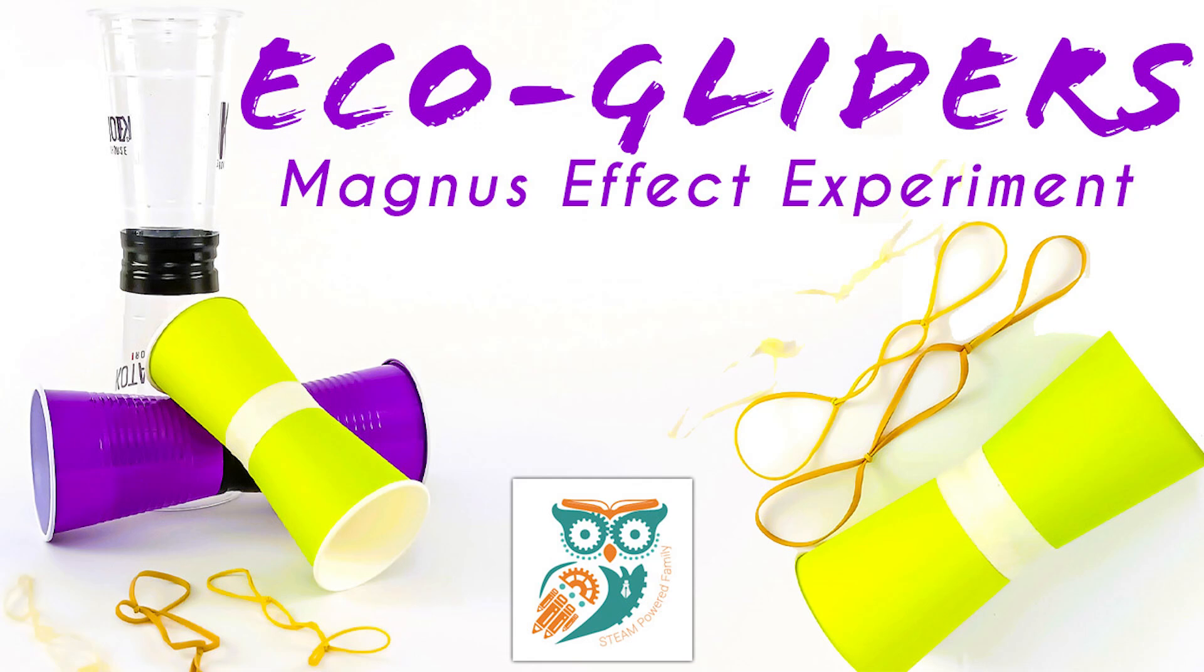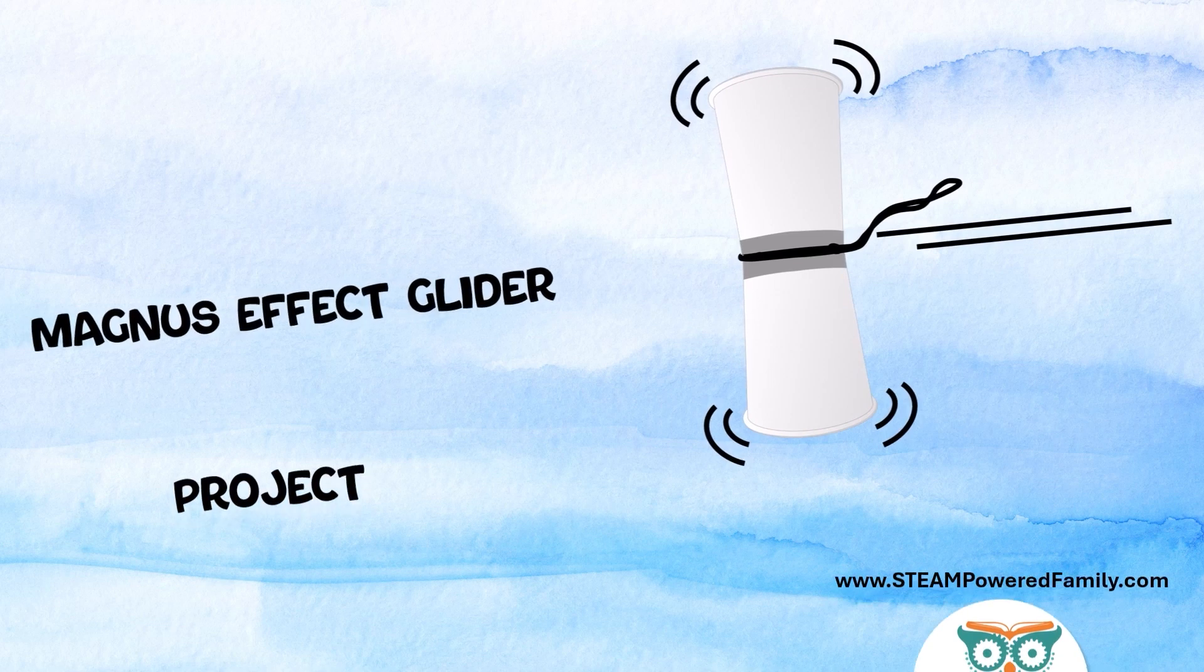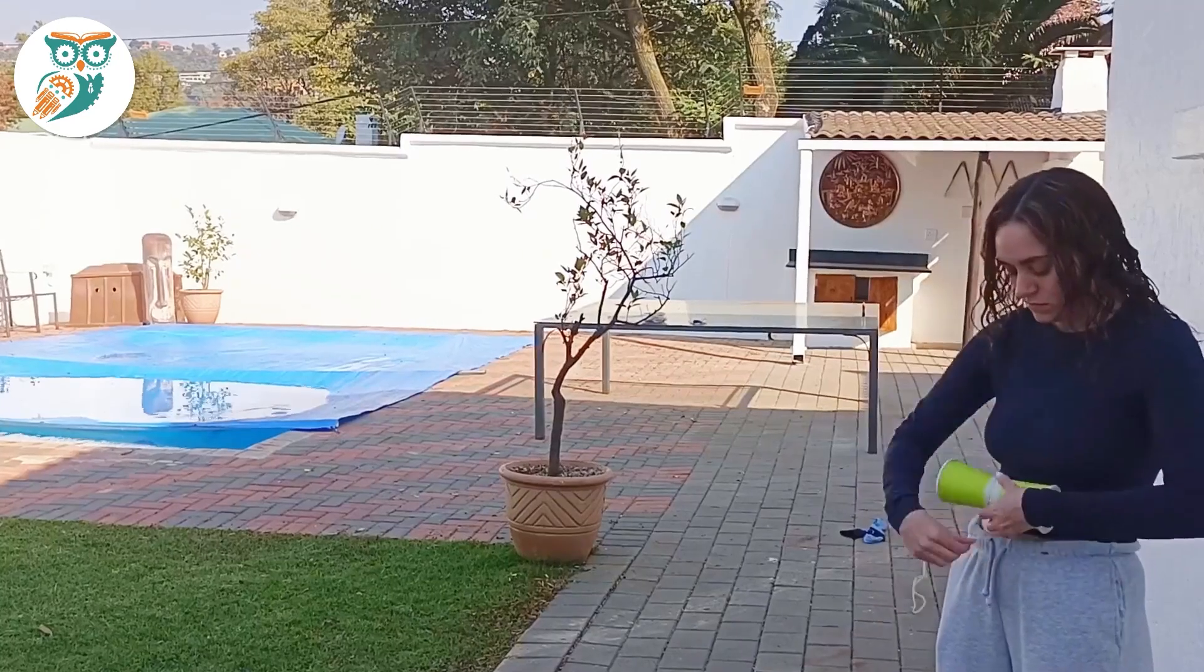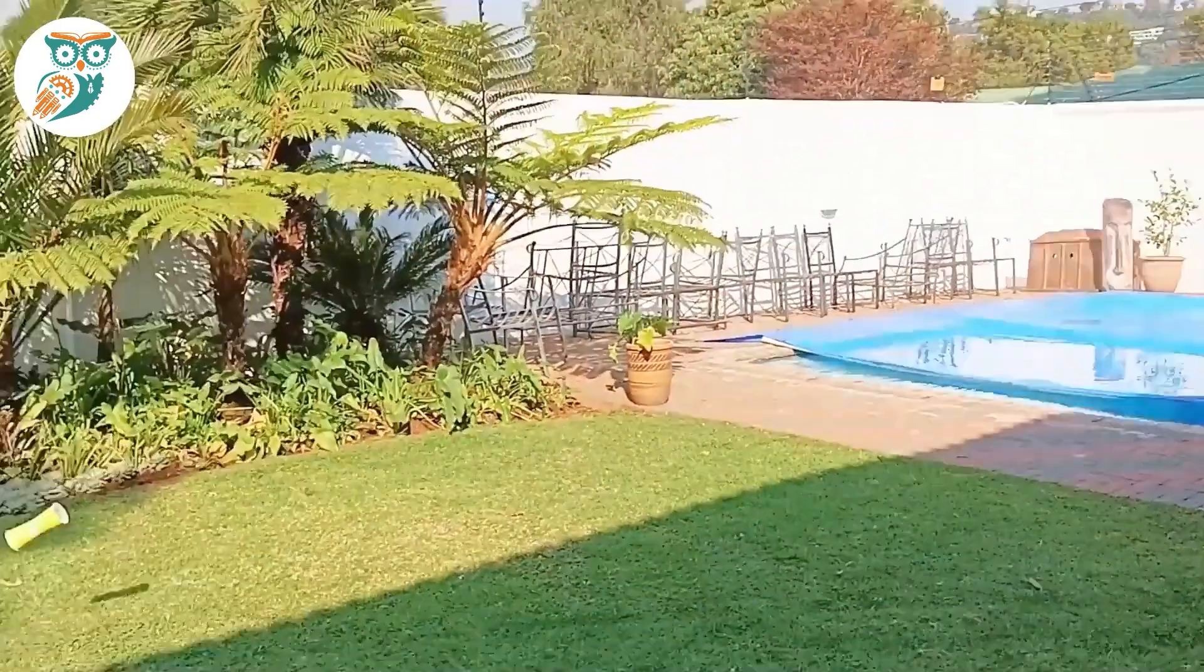Hi and welcome to Steampowered Family. Today we're making eco gliders or cup gliders that are going to demonstrate the Magnus effect. This is a quick and easy activity that you can do at summer camp, in the schoolyard, or in the backyard with your kids this summer.